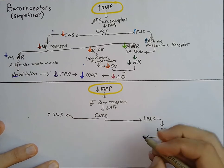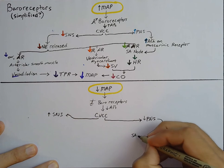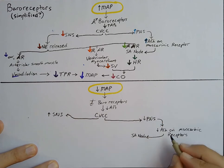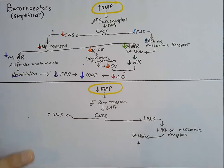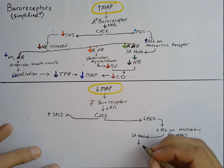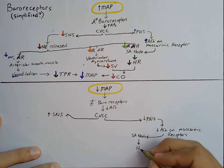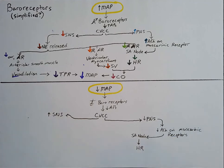At the SA node, what's going to happen? If we decrease the release of acetylcholine on the SA node, we know that is going to stop the reduction in heart rate. So that's going to start working on that heart rate — it's going to make it so we're no longer hyperpolarized, which is awesome. We're part of the way to where we need to be, but not completely there.